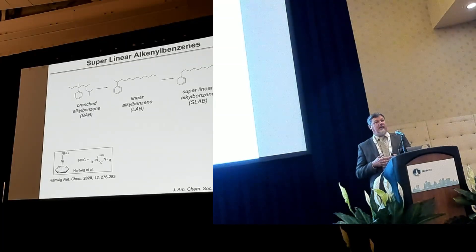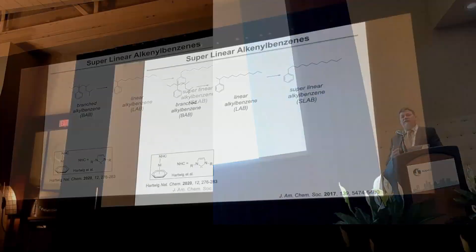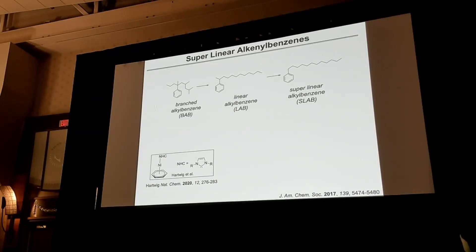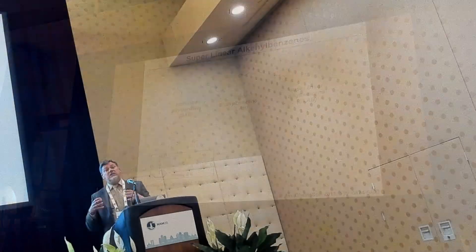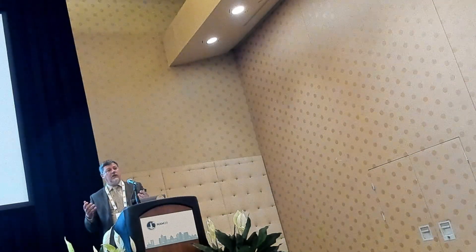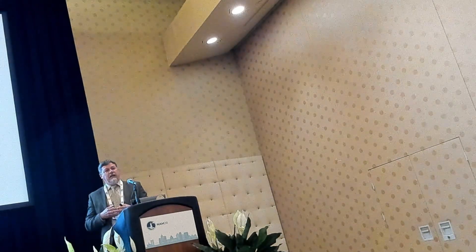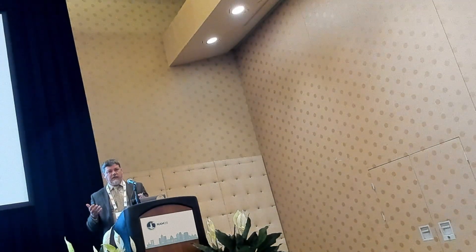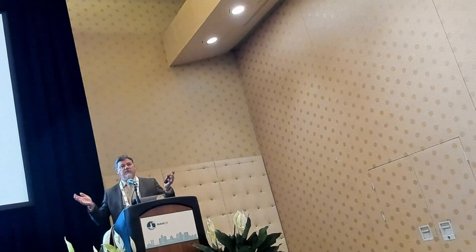These catalysts do selectively make anti-Markovnikov products. If you look at the history of long-chain alkyl aromatics, years ago branched alkyl benzenes were commercial products — sulfonated and used as surfactants. Then due to environmental concerns, linear alkyl benzenes, such as 2-substituted long-chain products, became commercial. But there is no commercial application of what we've been calling 'super-linear' alkyl benzenes — the 1-substituted terminal products. I don't think it's because these compounds have no potential value; I think it's because there's no scalable way to make these compounds with acid-based catalysts.